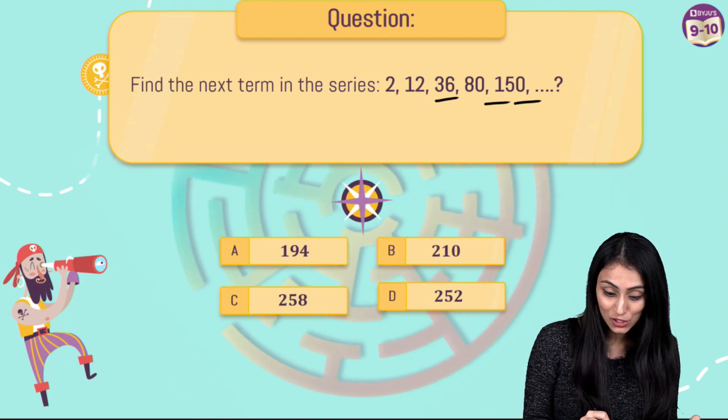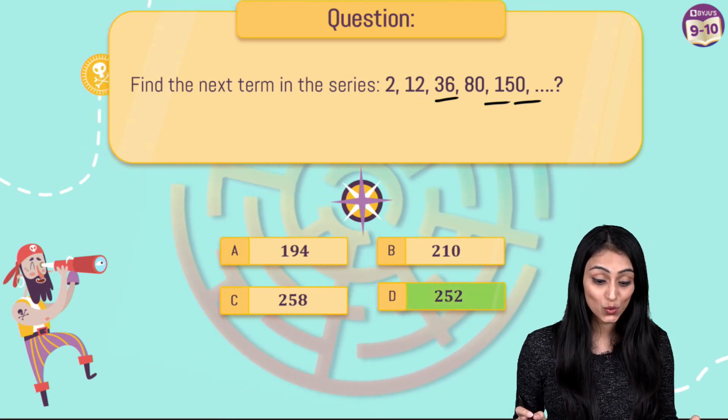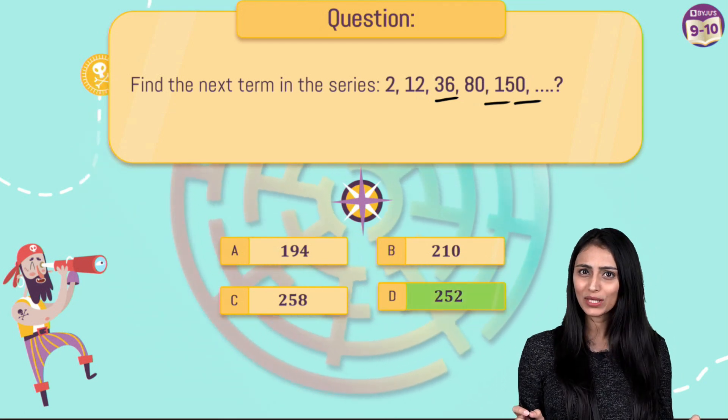So the correct answer for this question is, that's option D, 252. But how are we getting this answer?